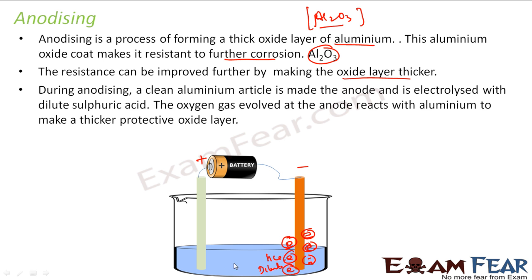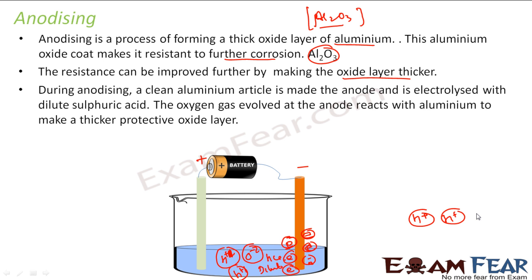Now this water will break into hydrogen ions (H⁺) and oxygen ions (O²⁻). For every oxygen ion there will be two hydrogen ions. So water breaks into hydrogen ions and oxygen ions.